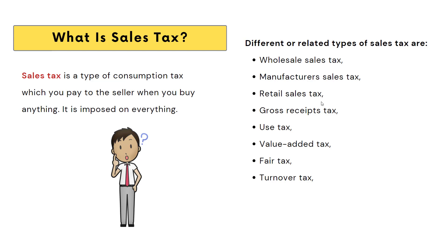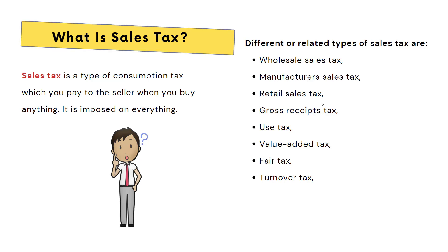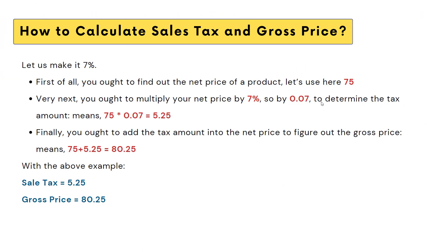Let us see how to calculate the sales tax. We took an example so you guys can understand how to calculate the sales tax and gross price. The tax rate actually differs from country to country — sometimes it's seven percent, sometimes five percent. Let us just imagine the tax of the country is seven percent for now.